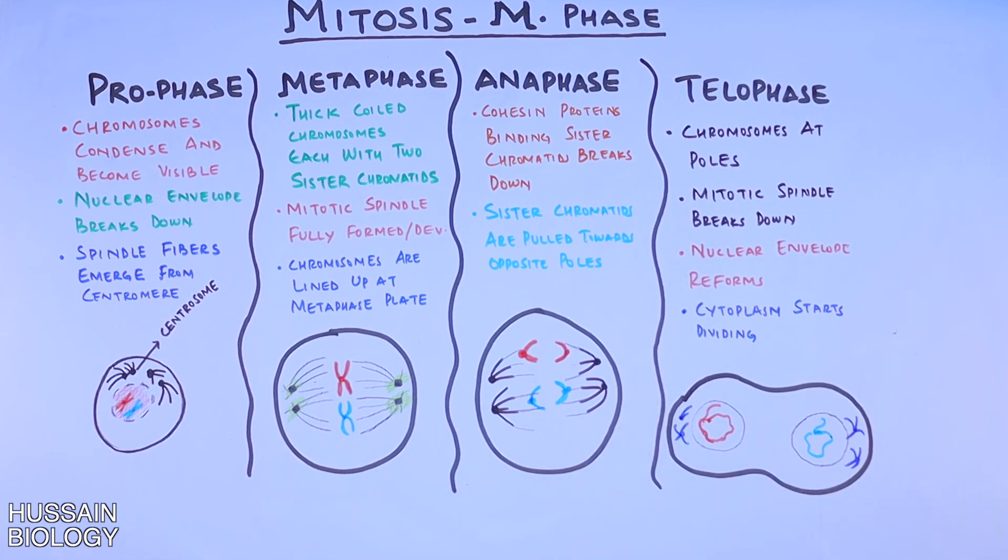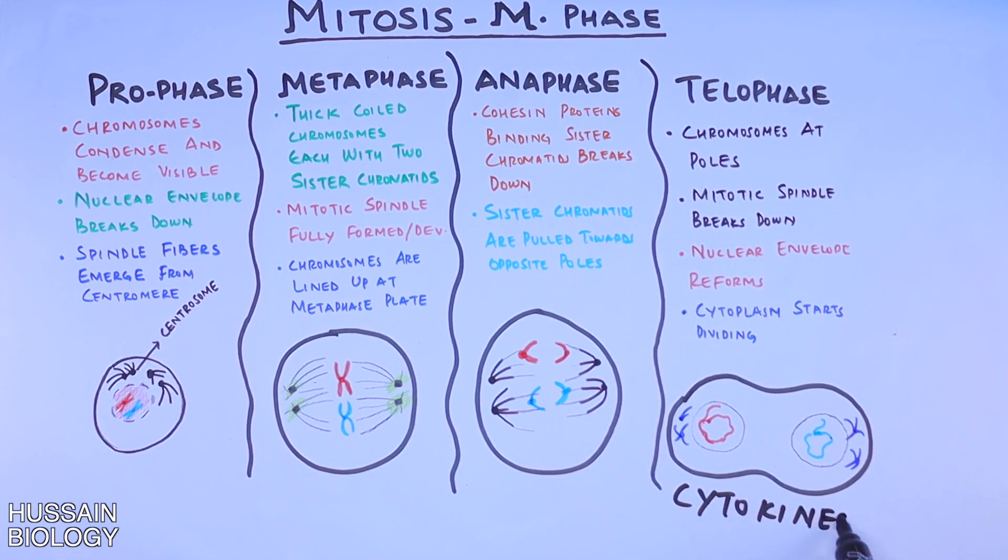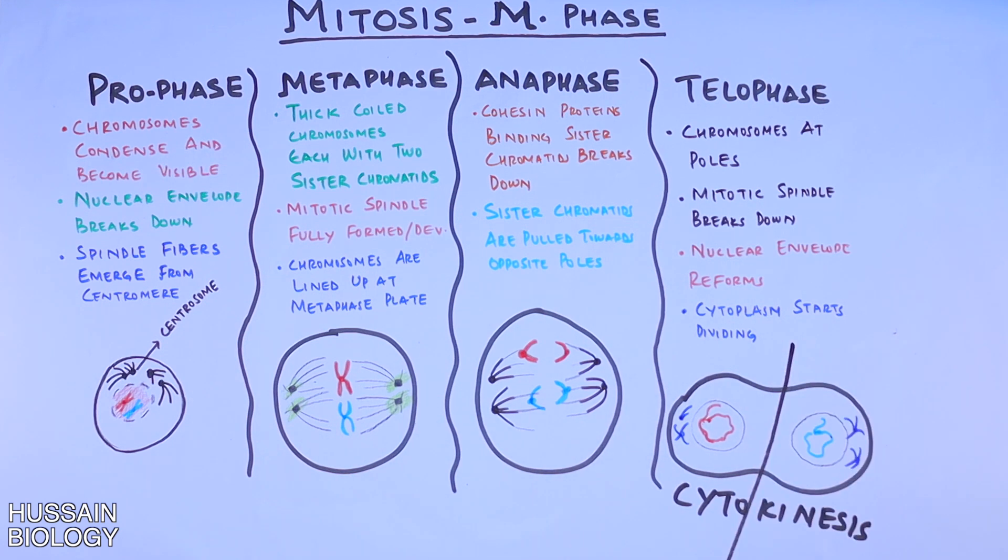But after that, we also have cytokinesis, where the mother cell actually divides into two daughter cells, but it's not a part of M-phase. So this is how the M-phase proceeds and generates two daughter nuclei.